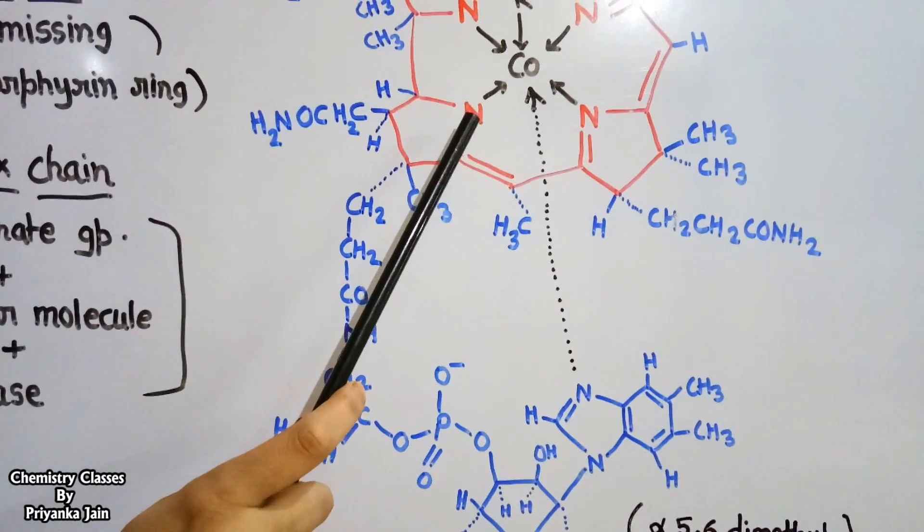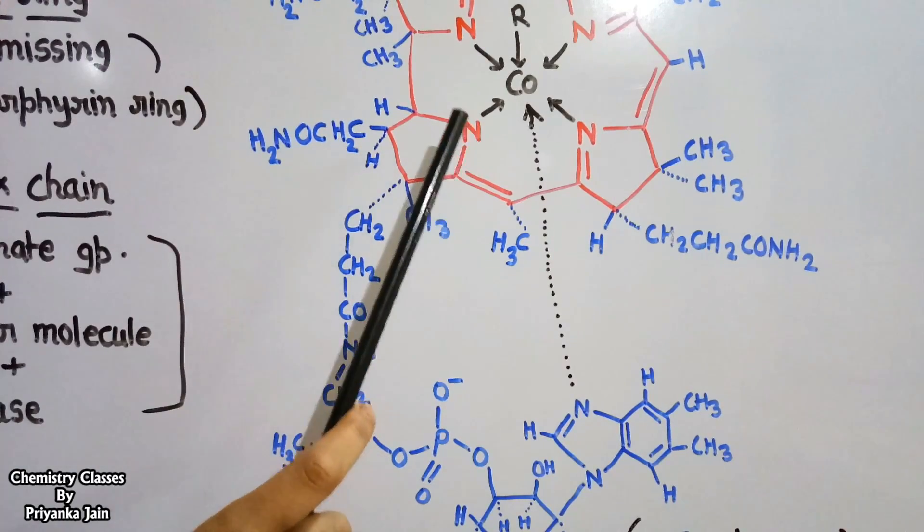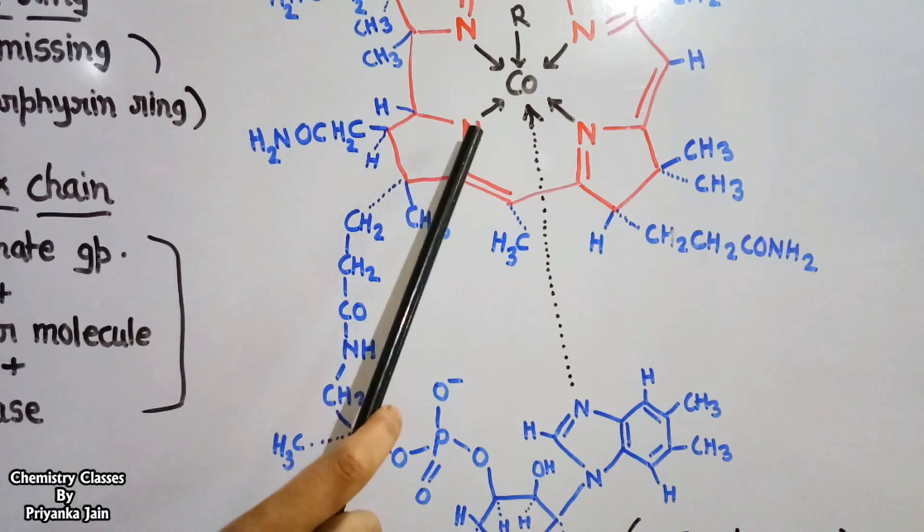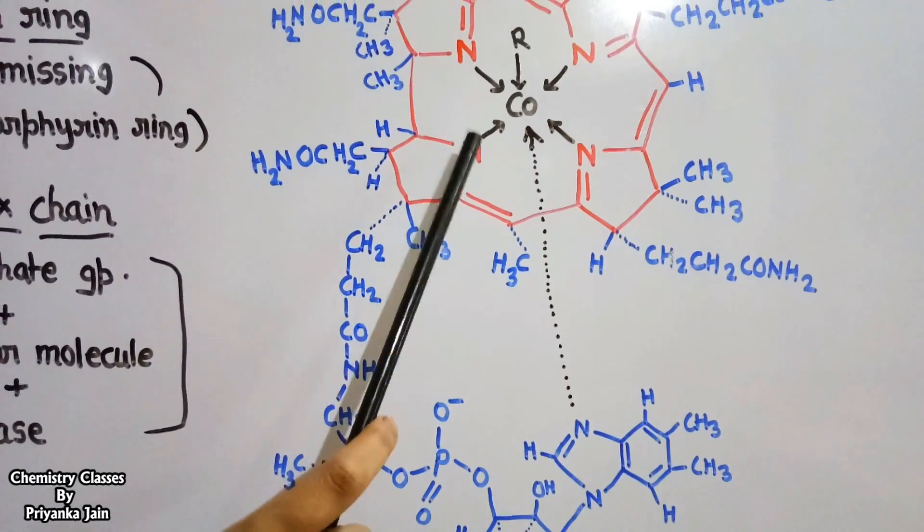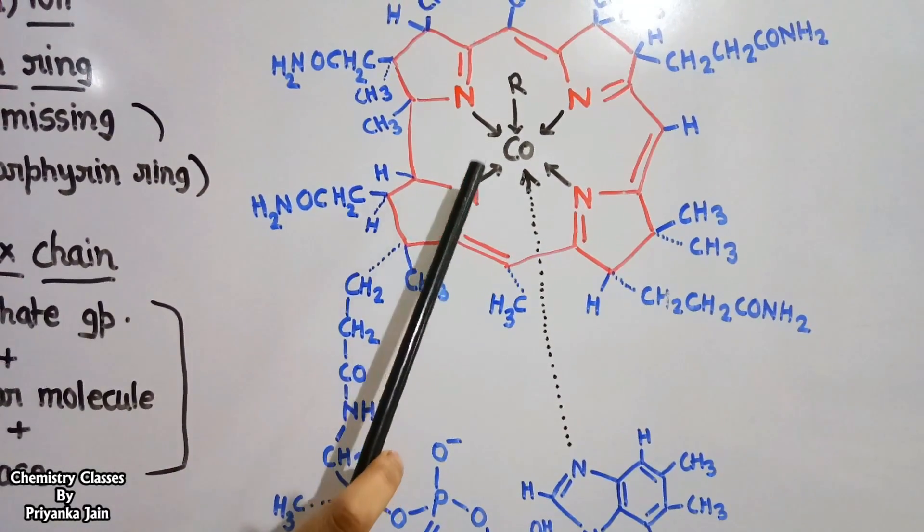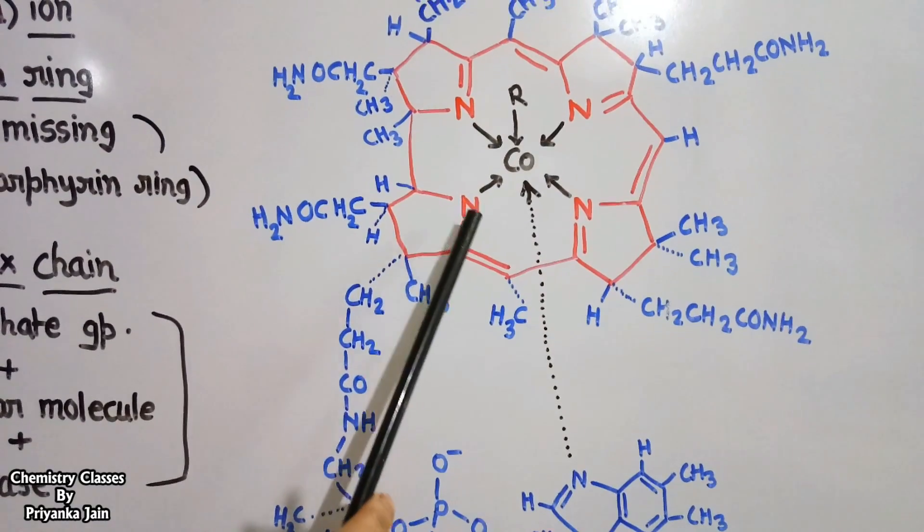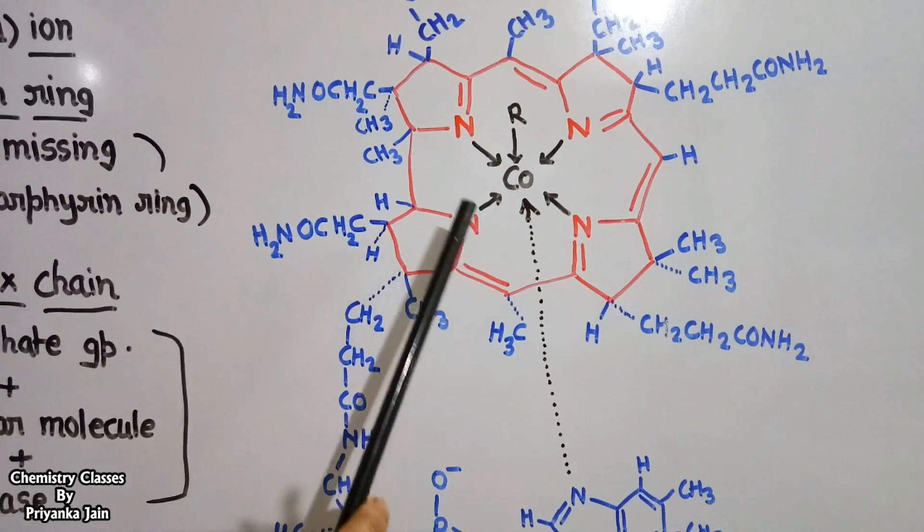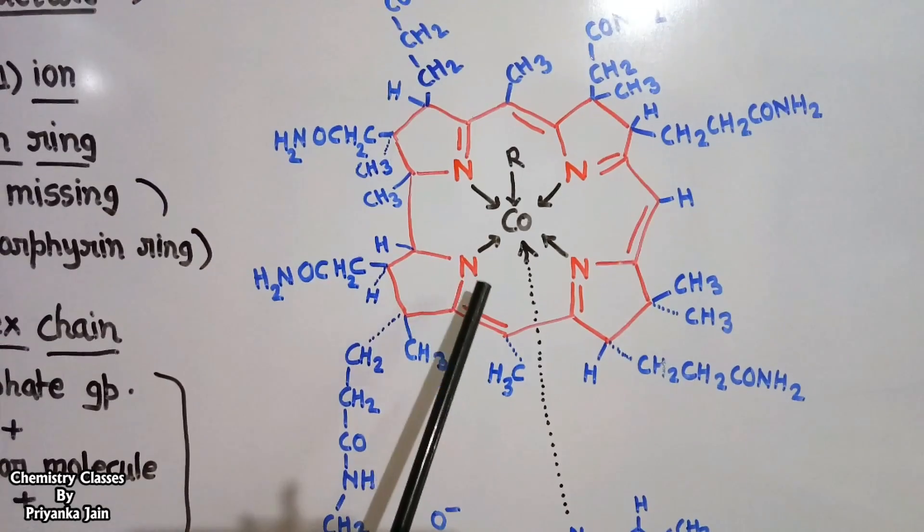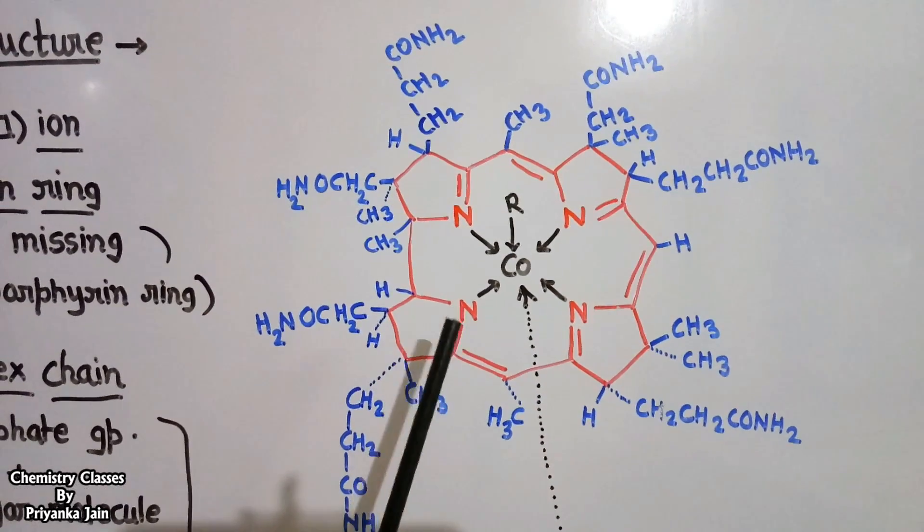The sixth position of the cobalt ion remains vacant in naturally occurring vitamin B12 and is occupied according to the need of the body as the reaction takes place. When we isolate vitamin B12, a cyanide group is added at this position artificially, and we get cyanocobalamine. But in naturally occurring vitamin B12, there is no cyanide group present at this position.